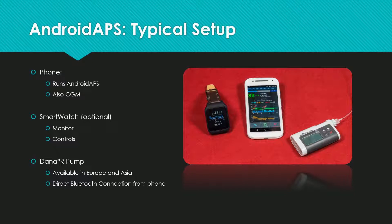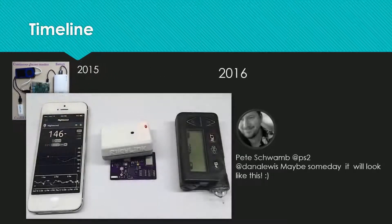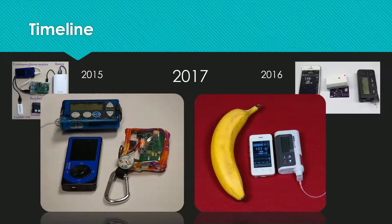Let's have a look at the development timeline of the open source closed loop systems. Two years ago, Dana presented the first one. Last year, Nate showed that the vision of Pete with a more integrated system had become reality. And this is where we are this year — it feels right on track.